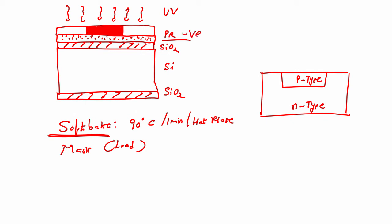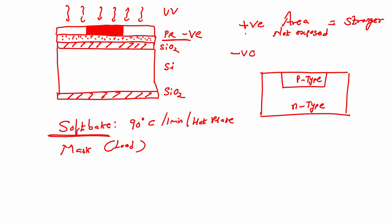We have to use negative photoresist. Why? Because with negative photoresist, whatever area is not exposed will be weaker. In positive photoresist, the area not exposed is stronger; in negative photoresist, the area not exposed will be weaker.